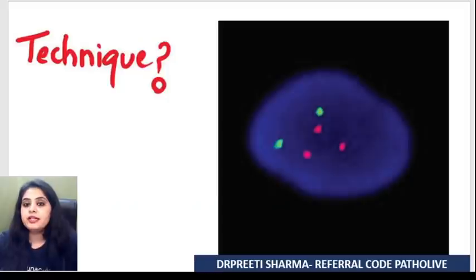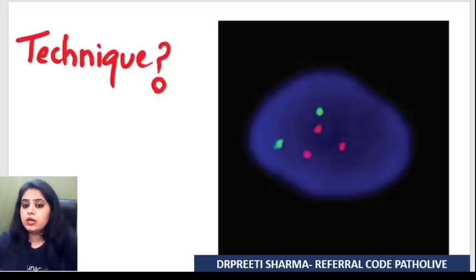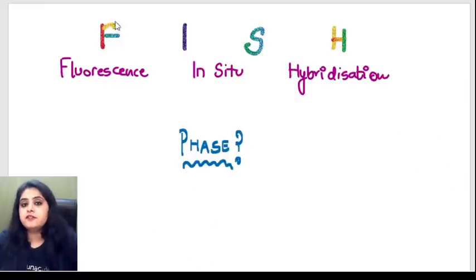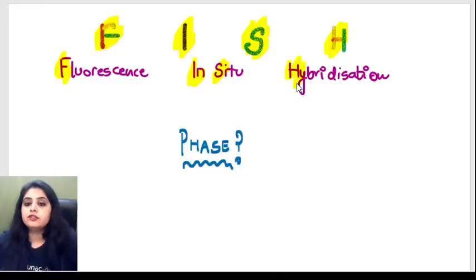Having said that, let's move on to the next set of images — something very, very important. This image has a blue nucleus and two colors: green and red. This technique is known as FISH — Fluorescence In Situ Hybridization.